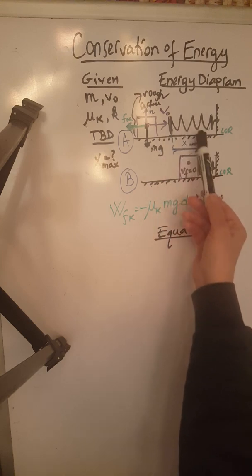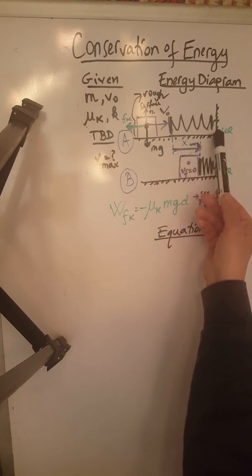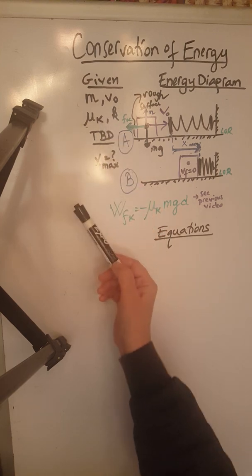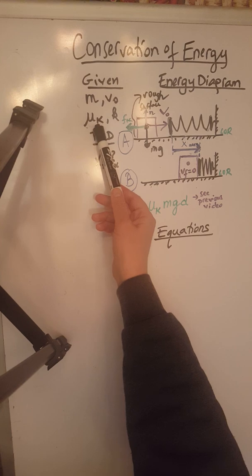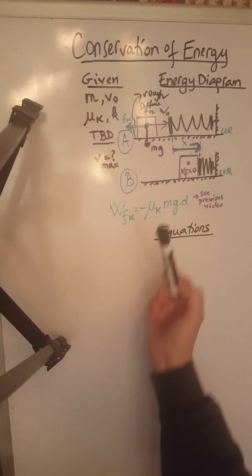The spring, to begin with, is in its natural length, has a constant k, and the surface is a horizontal surface, coefficient of friction being mu k, so that's a rough surface.